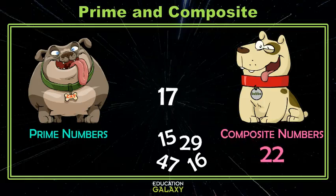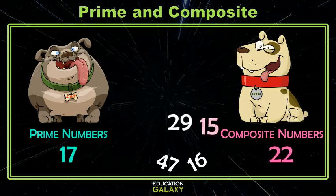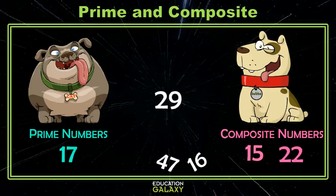17. We know 1 and 17, and I can't think of any others, so we'll let that one go over to Cat. 15 — we know it has 1 and 15, and then it also has 3 and 5, so that one we call composite.